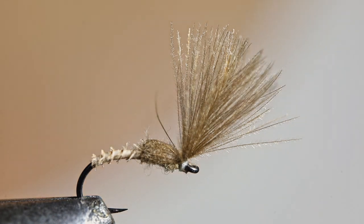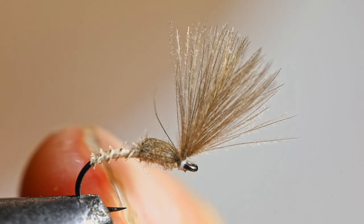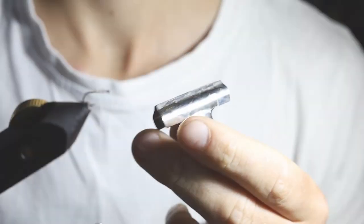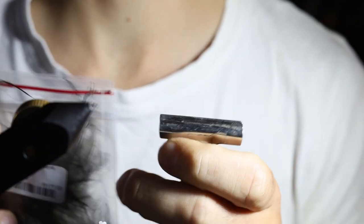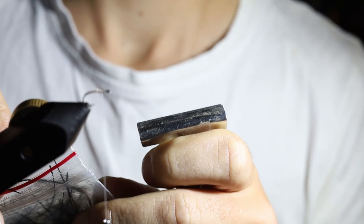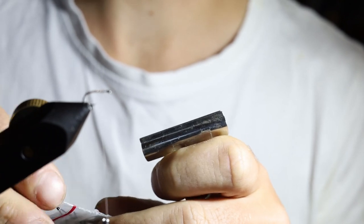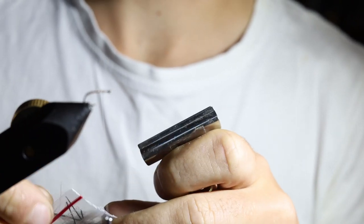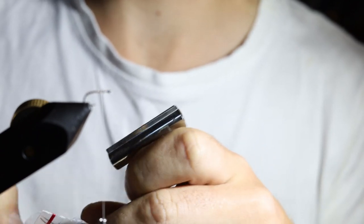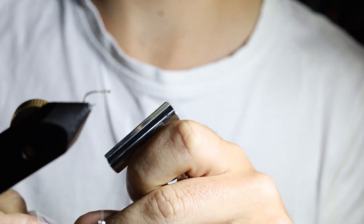It's really durable, especially if you add that superglue underneath the biot body. Right. So I mentioned there was another way to make a bunch of CDC for these shuttlecocks. If you can't get CDC with the right characteristics just to use the feather tips.